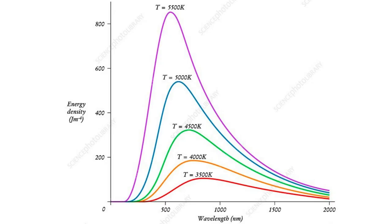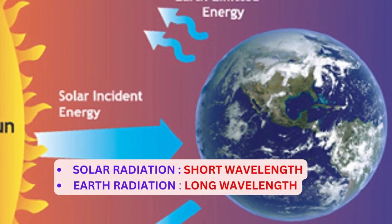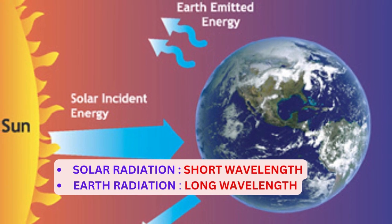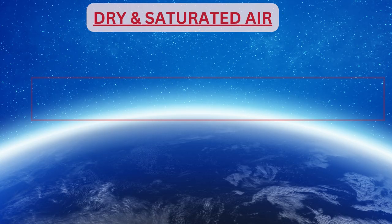If you have studied Wien's displacement law in physics, you would know that higher the temperature of a body, shorter is the wavelength of radiation and vice versa. The sun is much hotter than earth, which is why solar radiation is shortwave and earth's radiation is longwave.